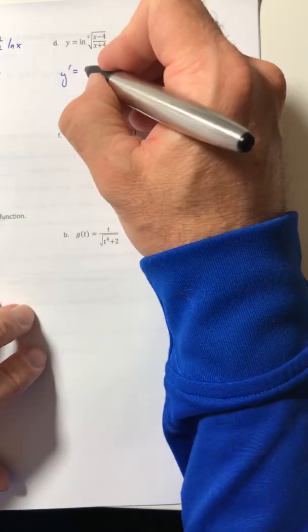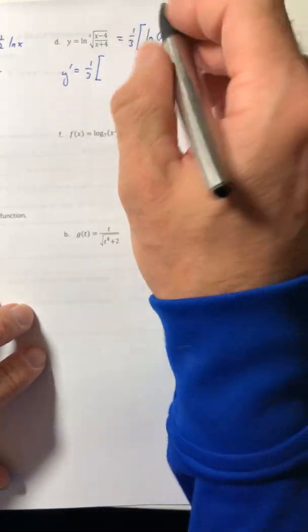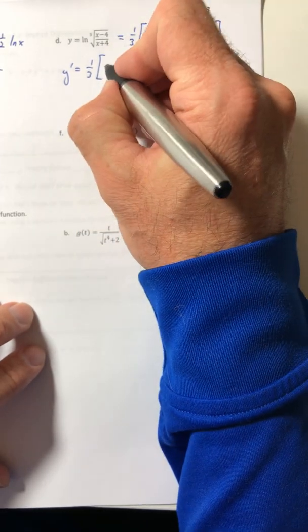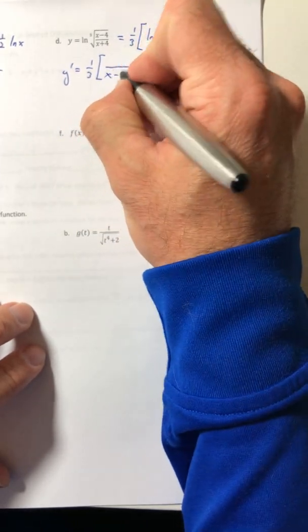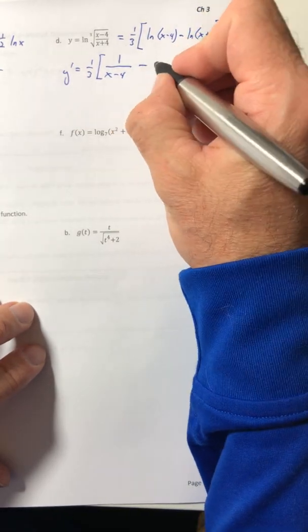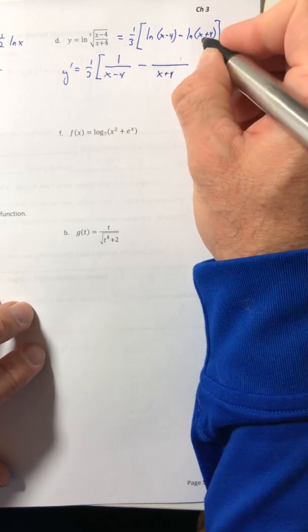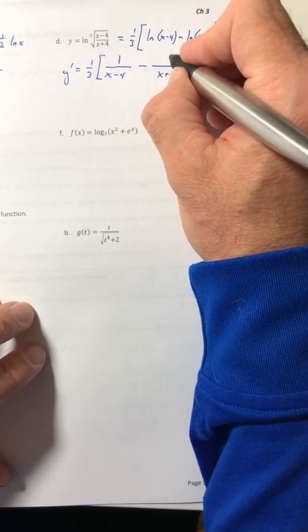So the one-third stays. The derivative of ln of x minus 4. So just the x minus 4 goes underneath. The derivative of x minus 4 is 1. And then just do the same thing over here. So the x plus 4 goes underneath. The derivative of x plus 4 is 1.